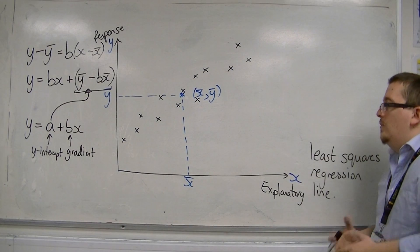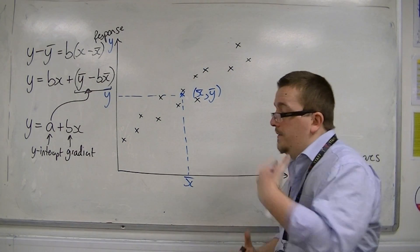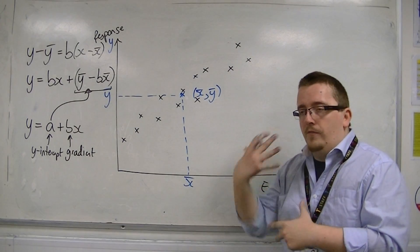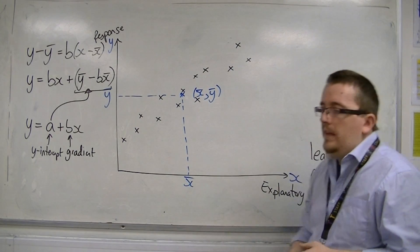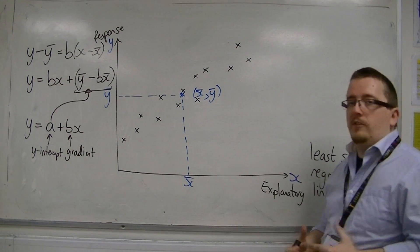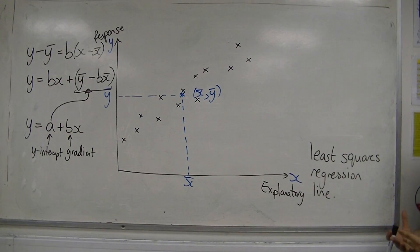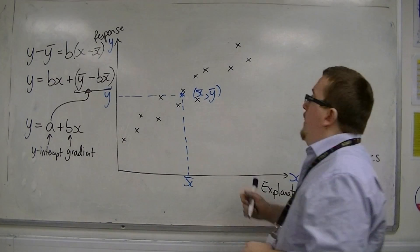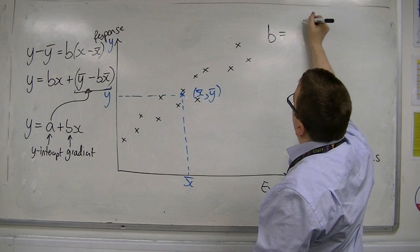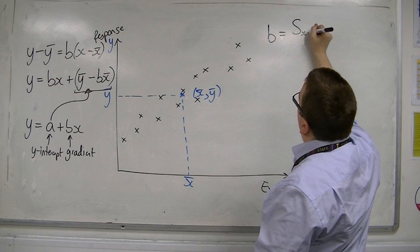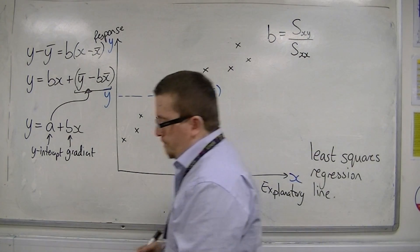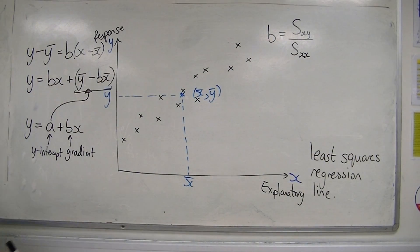How can we calculate the gradient b? The reasoning as to where the value of b comes from is a little bit beyond the scope of the book, but I'm going to try and explain it as best I can. b is equal to Sxy over Sxx.